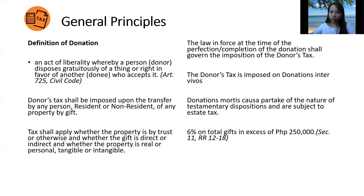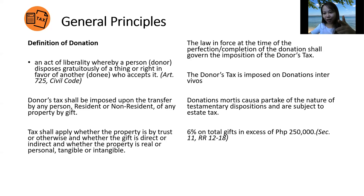The requisites of a valid donation are: first, there must be a valid acceptance; second, there must be the thing or subject matter; third, there must be delivery — actual or constructive; fourth, there must be capacity of the donor; and the donative intent, which is very necessary. In the absence of donative intent, the transaction may be considered in another form, not as a donation. The fourth requisite is acceptance by the donee.